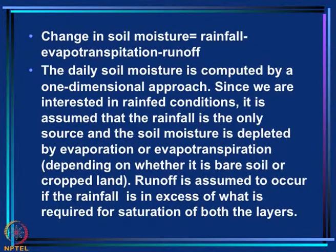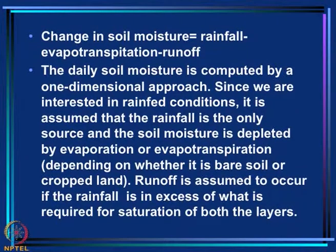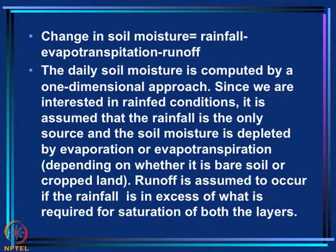We used a simple one-dimensional water balance approach — a model developed by Professor Rampresa at our institute. Since we are interested in rainfall conditions, rainfall is the only source and there is no irrigation. Soil moisture is depleted by evaporation or evapotranspiration depending on whether it is bare soil or cropland. Runoff is assumed to occur only when there is enough rain that, above evapotranspiration, the soil moisture reaches saturation in both layers.